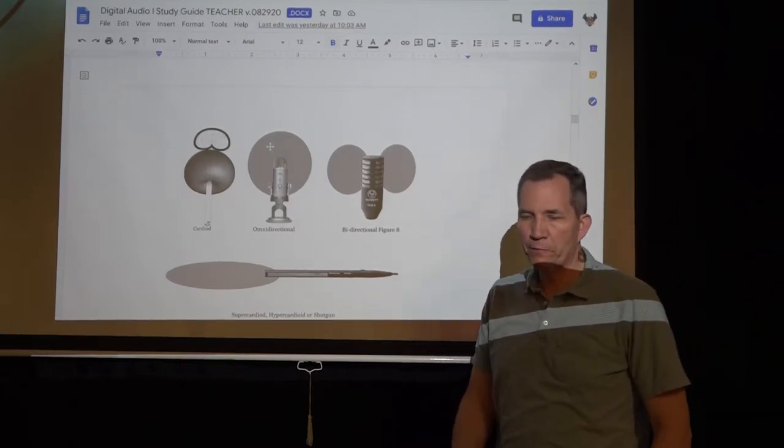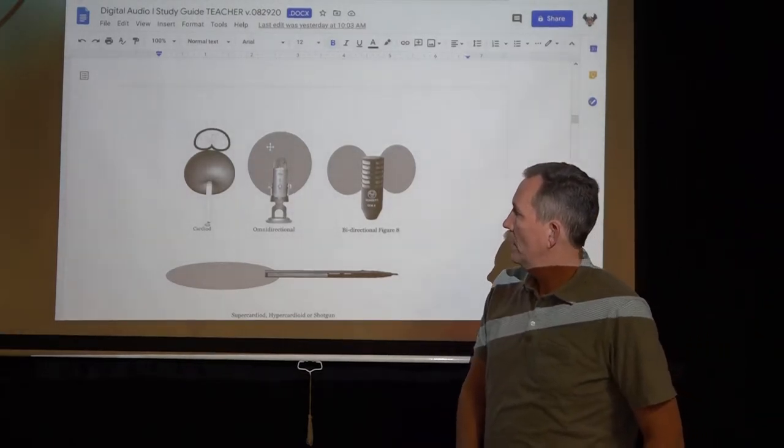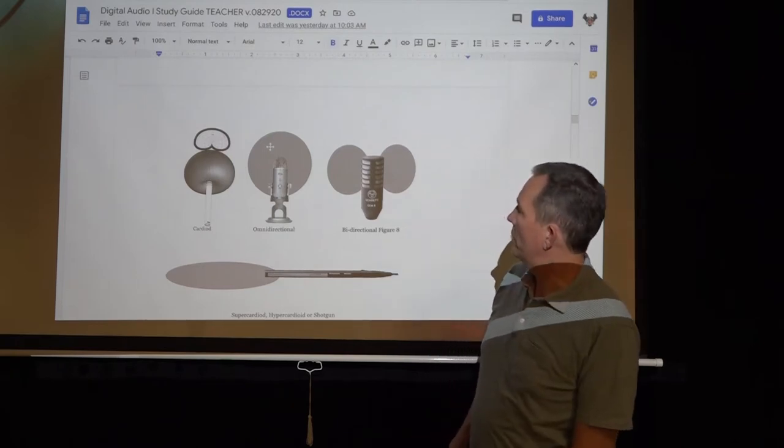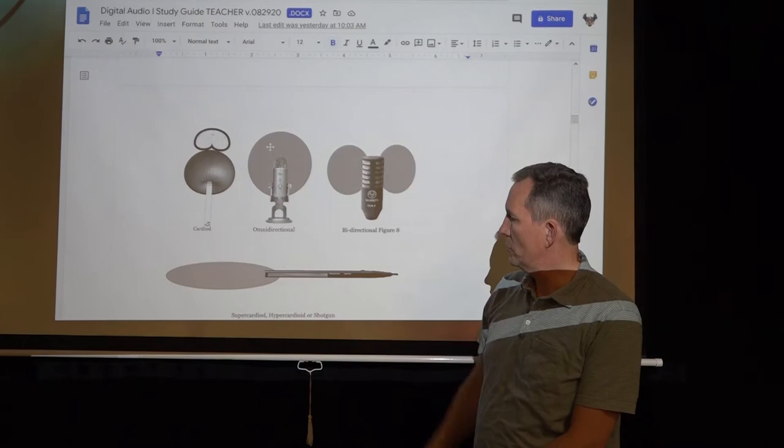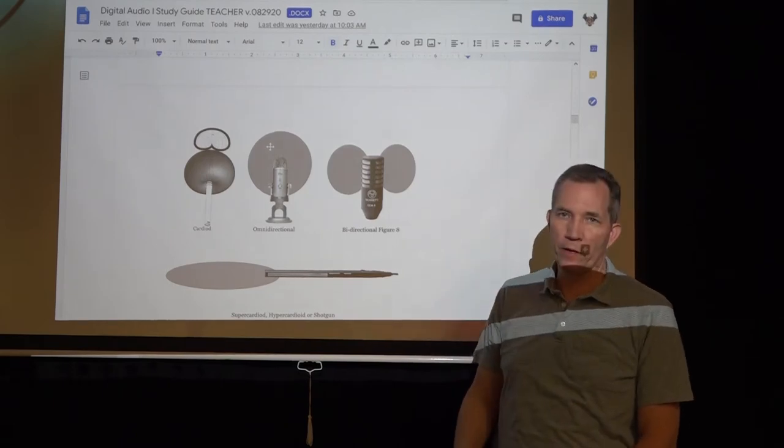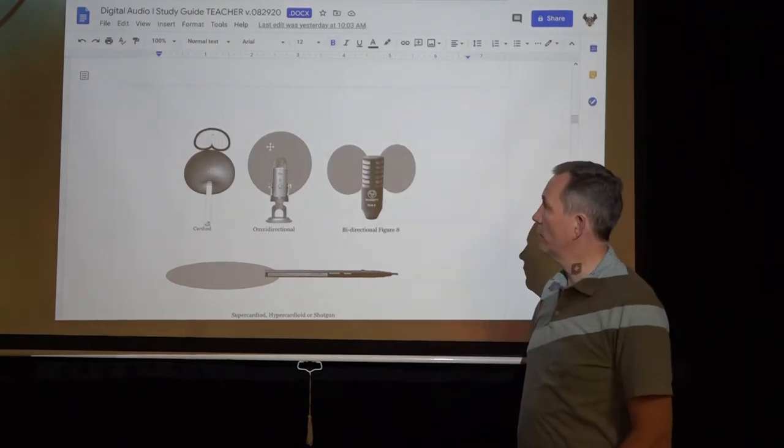Alright, we're going to talk about microphone pickup patterns. So these are the four main pickup patterns. You have cardioid, omnidirectional, bidirectional, supercardioid, or hypercardioid. And we'll talk about each one of them really quickly.